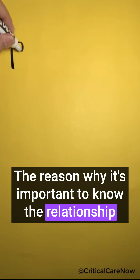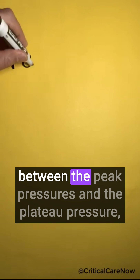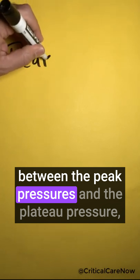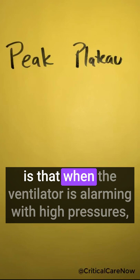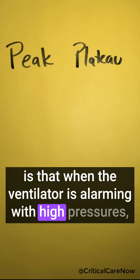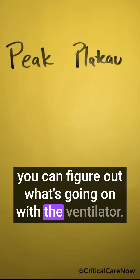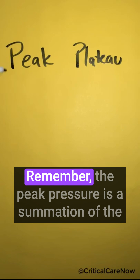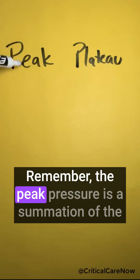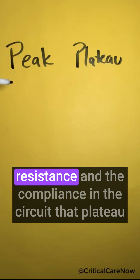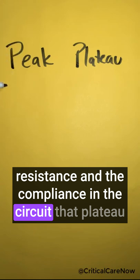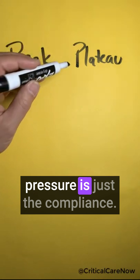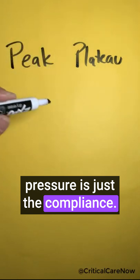The reason why it's important to know the relationship between the peak pressures and the plateau pressures is that when the ventilator is alarming with high pressures, you can figure out what's going on with the ventilator. Remember, the peak pressure is a summation of the resistance and the compliance in the circuit. The plateau pressure is just the compliance.